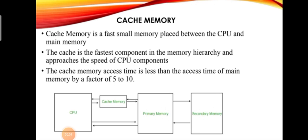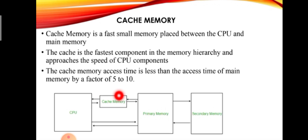Good morning all. Today we are discussing cache memory. In our last memory hierarchy, you will find cache memory. That is primary memory with storage capacity and fast access. That is our cache memory, and this figure shows a very small size.